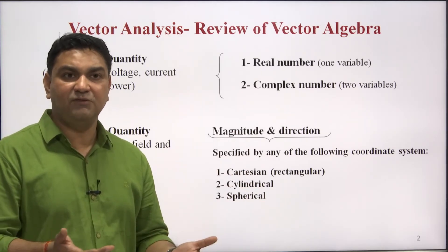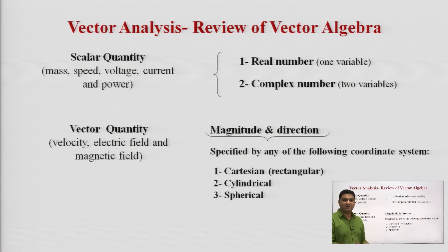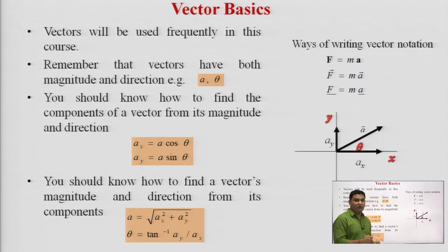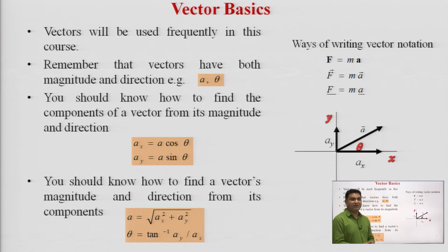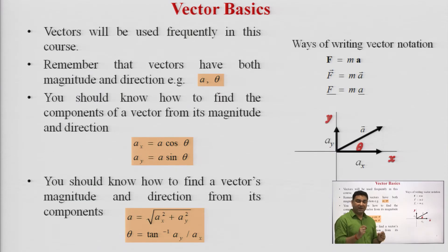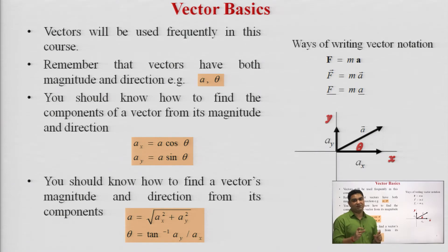Vector quantities can be specified by any of the following coordinate systems: Cartesian coordinate system, cylindrical coordinate system, and spherical coordinate system. Vectors are the most fundamental parameters for electromagnetic field theory and are very frequently used throughout the complete subject of EMFT and antenna. Vectors need both magnitude and direction to be described — here magnitude is represented as A and direction as theta.